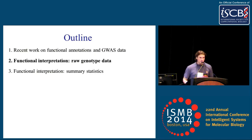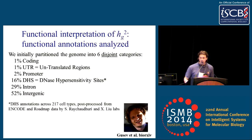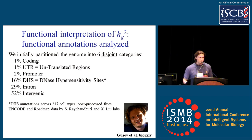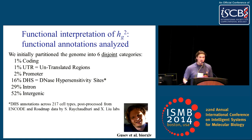Moving on to some of our group's work, starting with functional interpretation using raw genotype data. This work was led by Sasha Gusev in our group; the paper is on bioRxiv. For our initial experiments, we did something pretty simple — we partitioned the genome into six simplistic annotations: coding, UTR, promoter, DHS, intron, and intergenic.